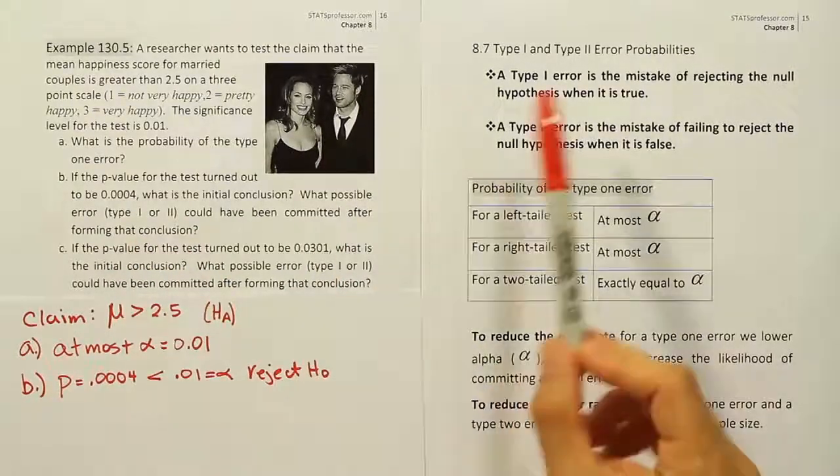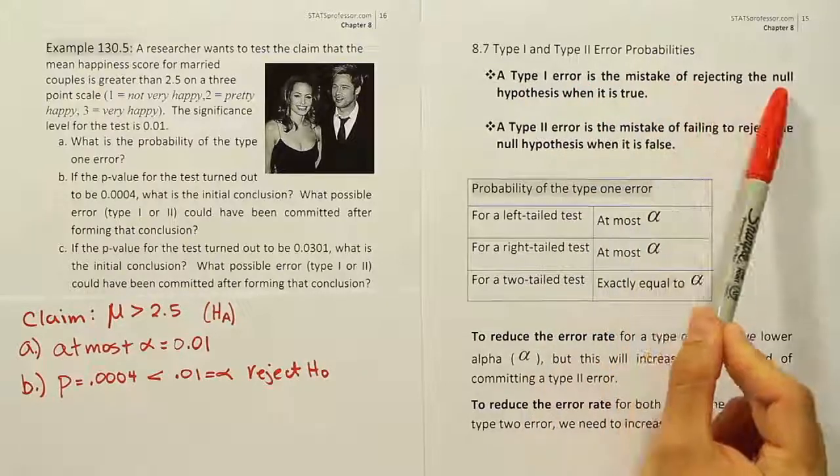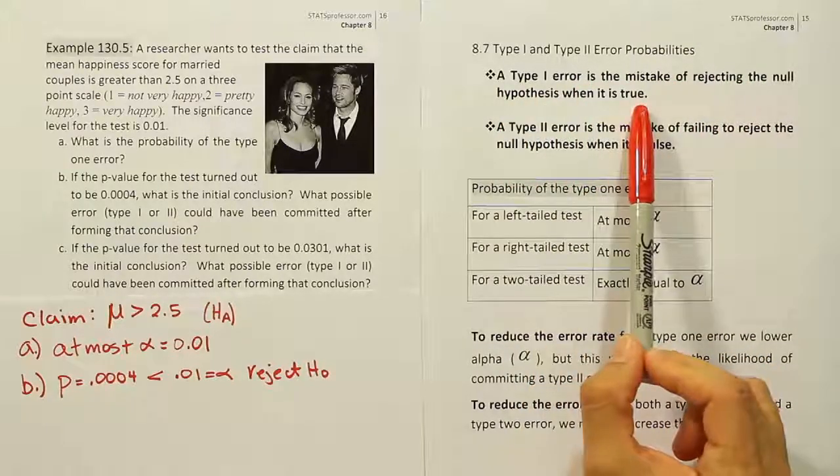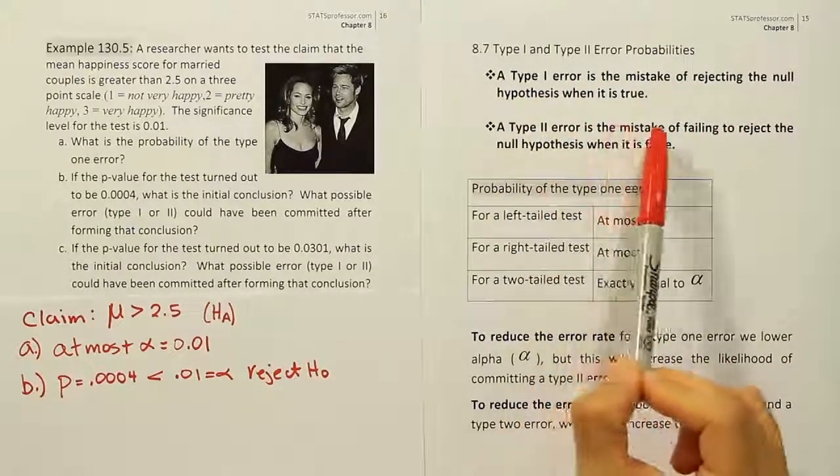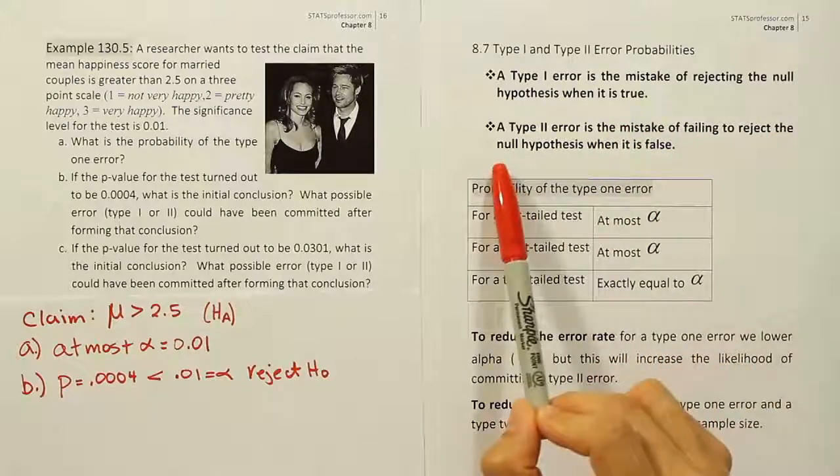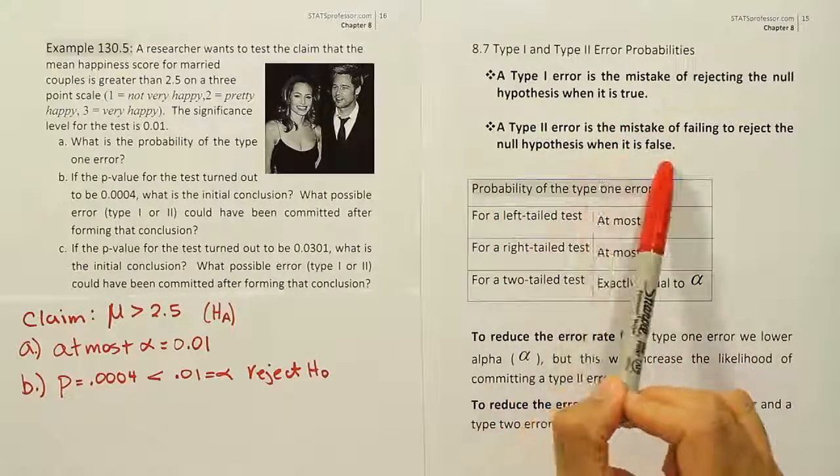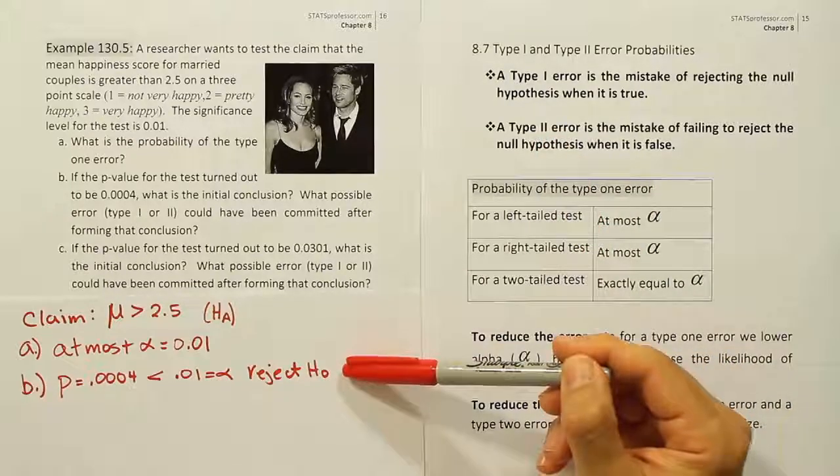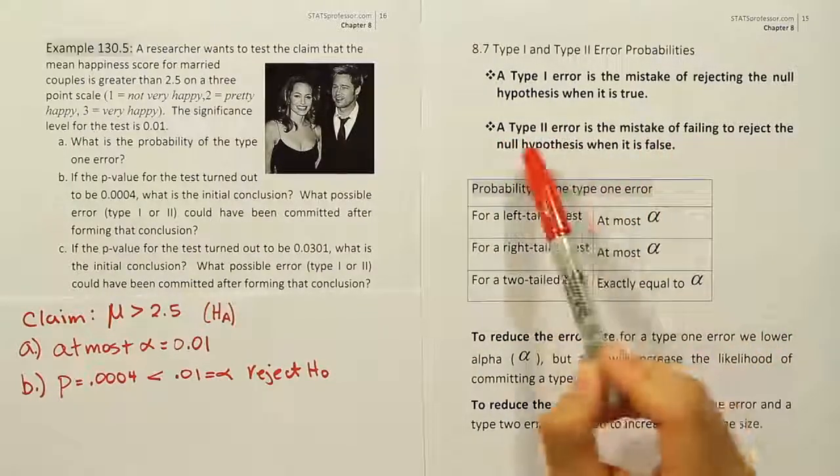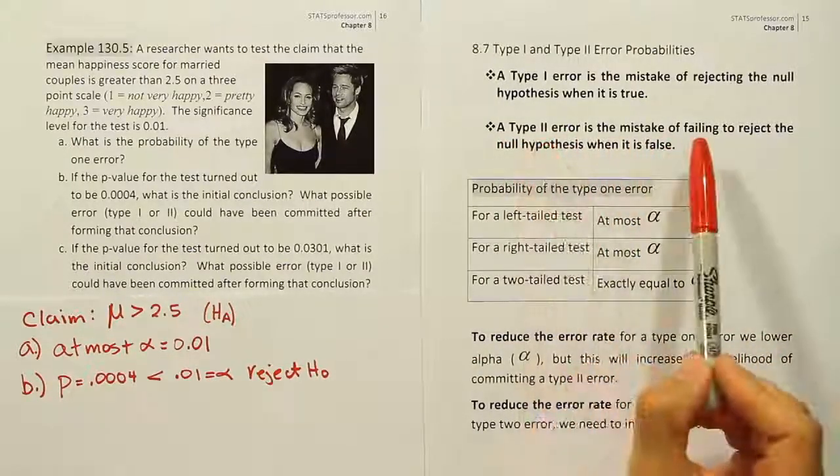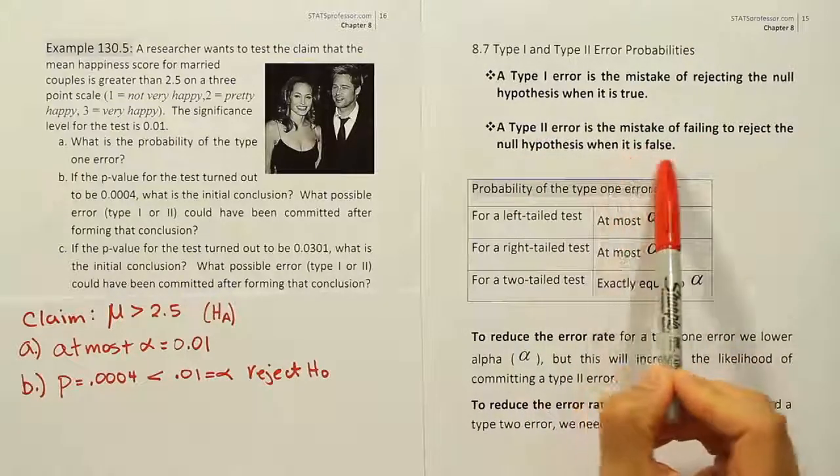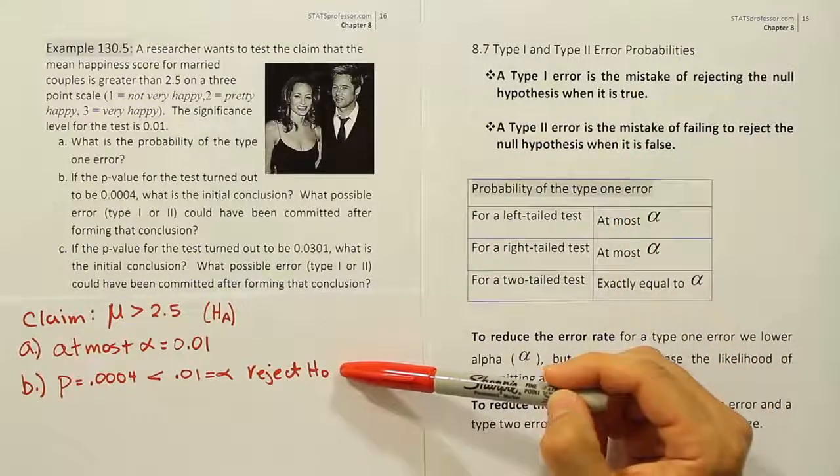Well, don't forget that a type 1 error is the mistake of rejecting the null when it is true. For a type 2 error is the mistake of failing to reject the null when it really is false. Well, we rejected the null, so we couldn't have committed a type 2. That's not possible, because a type 2 requires that we do not reject a false null hypothesis. Well, we rejected our hypothesis, the null hypothesis.